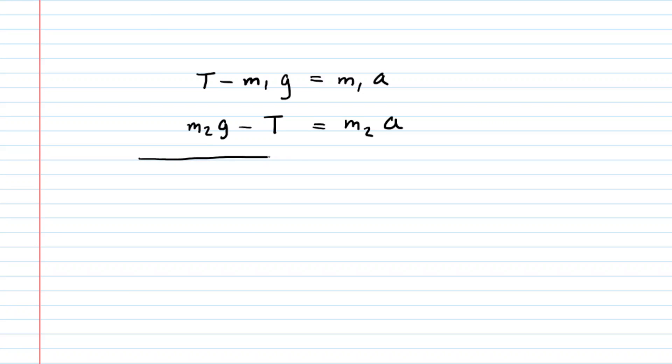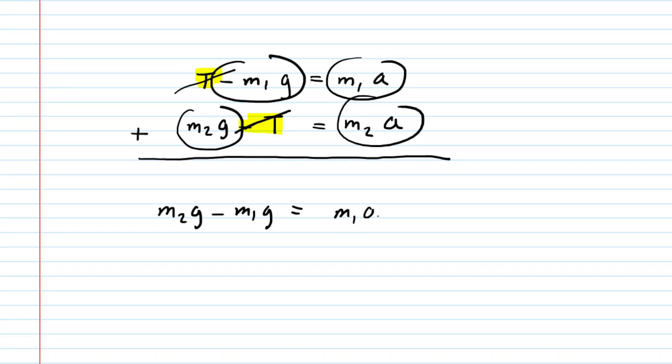So here are those two equations stacked one on top of the other, and what we'll do is actually add them together. This is kind of a neat trick in this question, because if you notice carefully, when you add the positive tension to the negative tension, those will go to zero. Essentially, they'll cancel out. So those would be eliminated. And then when we continue to add, we'll have this positive M2g minus that M1g. And then on the other side, when we're adding this to this, these are not like terms, so we'd have to write M1 times a plus M2 times a.